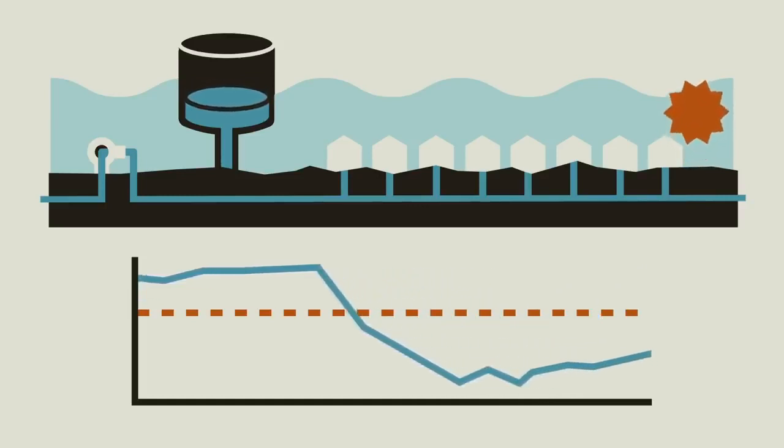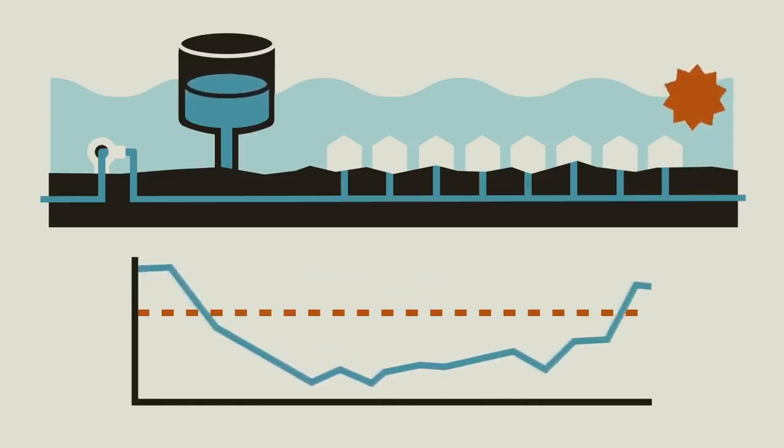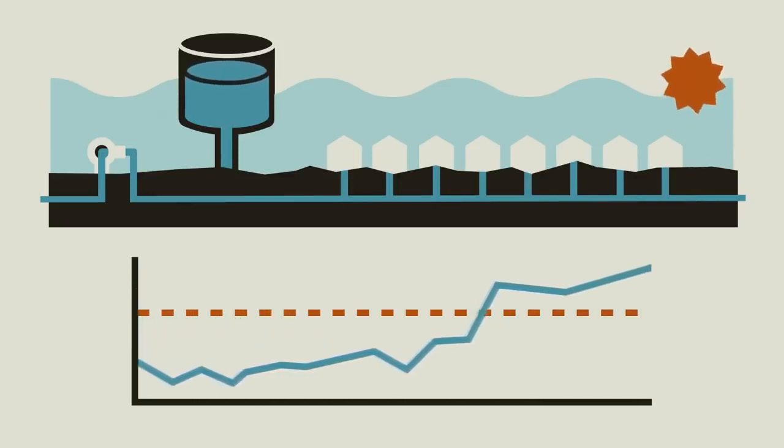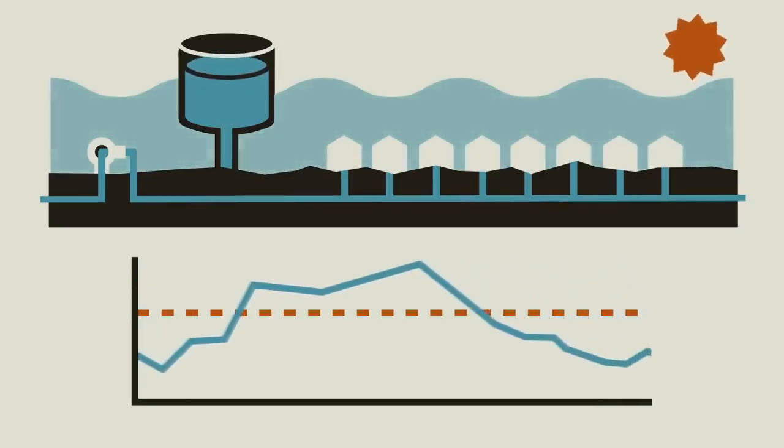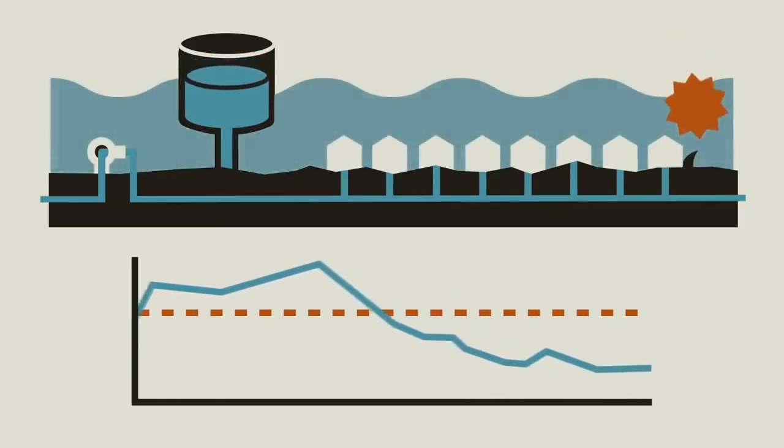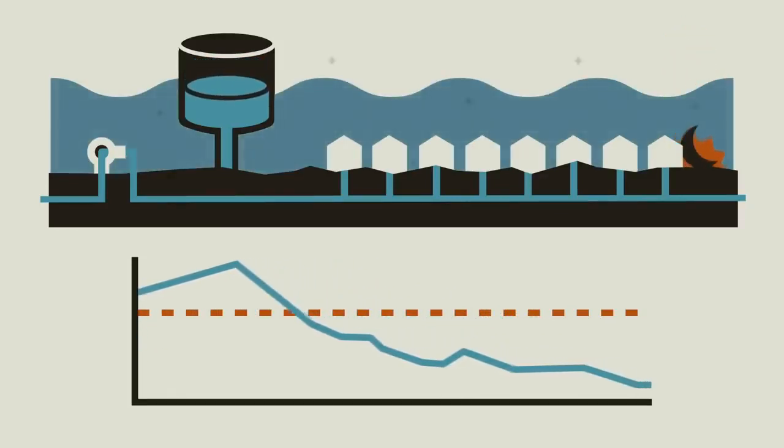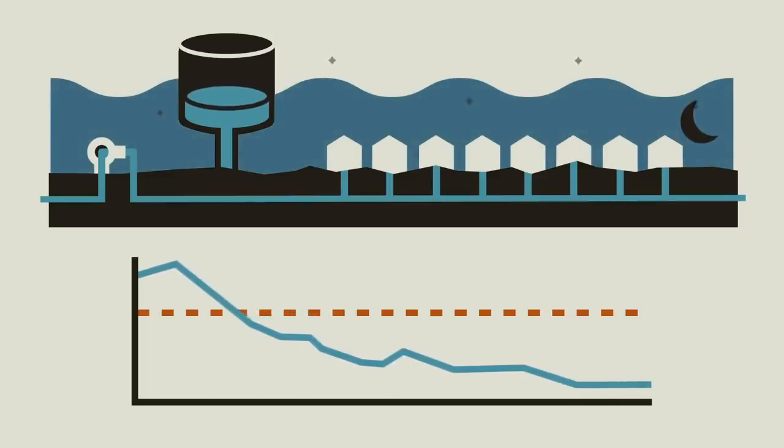As people start their day, demand again drops below average, but the pump keeps running and the extra flow goes into the tank. Demand again begins to spike as residents of the city start cooking dinner, taking baths, and watering the plants. All this extra water use drains the tank again before most people go to bed and the cycle starts again.